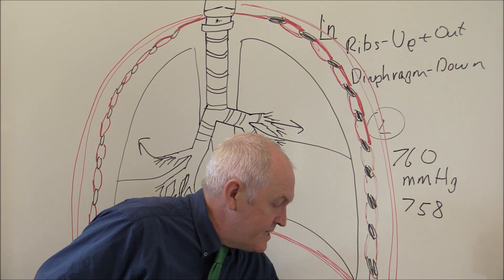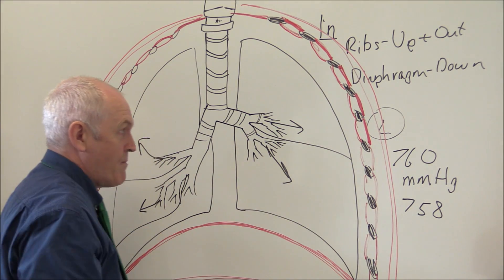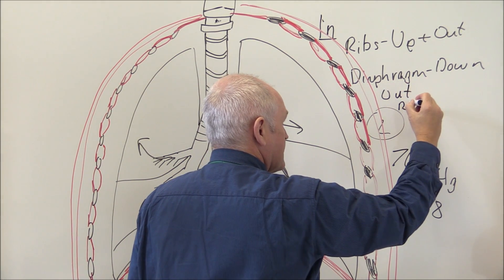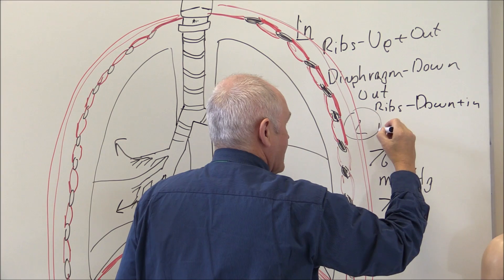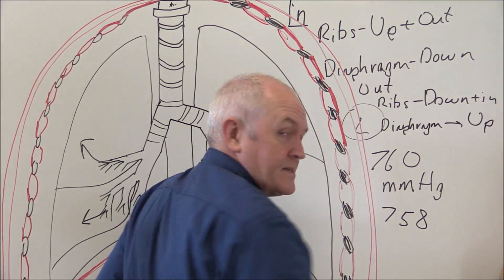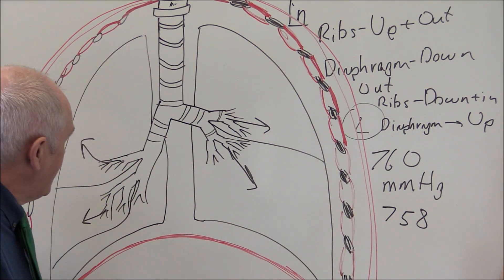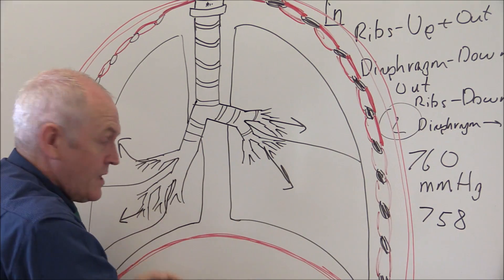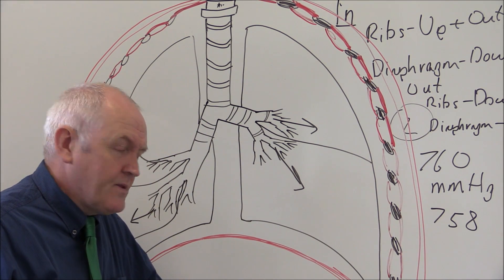To expire — to breathe out — the chest wall goes down and in, and the diaphragm goes up into the domed position, because in the domed upward position the diaphragm is relaxed. Both of these effects — the downward movement of the chest wall and the upward movement of the diaphragm — reduce the volume in the thoracic cavity.